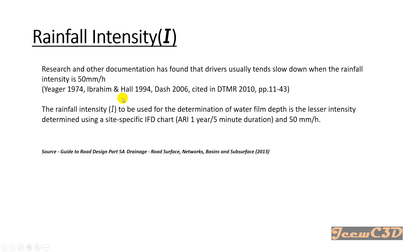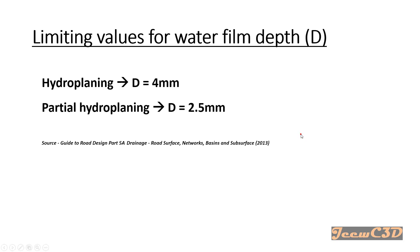Research has shown that if a driver experiences rainfall of about 50 millimeters per hour, they automatically reduce their driving speed. That is the basic assumption used in this aqua planning analysis. If you have one-year, five-minute duration rainfall intensity data using IFD curves you can use that; otherwise use 50 millimeters per hour as the maximum rainfall intensity for the calculations.